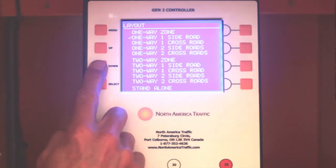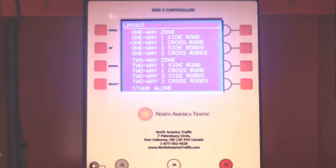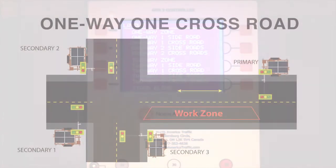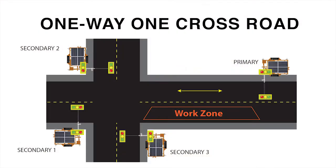One Way One Cross Road requires the primary and secondary one on the one-way road. Secondary two and secondary three will be on the crossroad as a two-way phase.